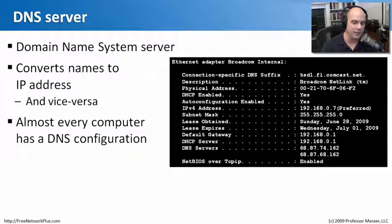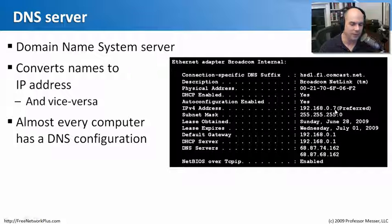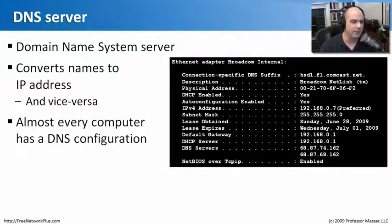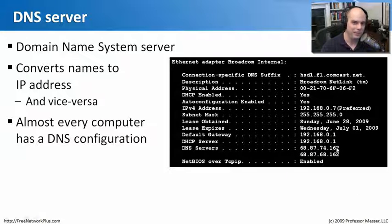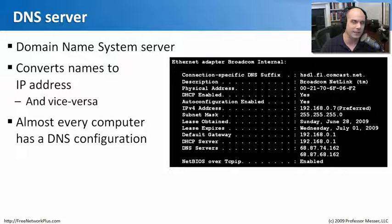Every computer communicating on the internet has a DNS configuration. Here's an example from my machine — I have an IP address provided automatically, and DNS servers provided by my internet provider, Comcast. When I go to google.com, my machine first asks the first DNS server on the list for Google's IP address, and if it doesn't know, it goes to get that information. From that point on I can communicate directly to Google without needing to go back to DNS.